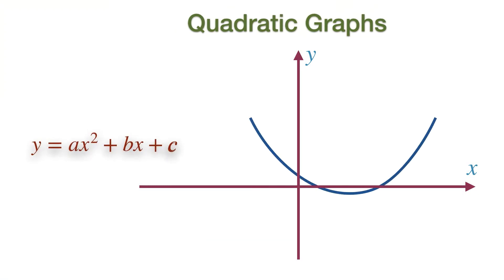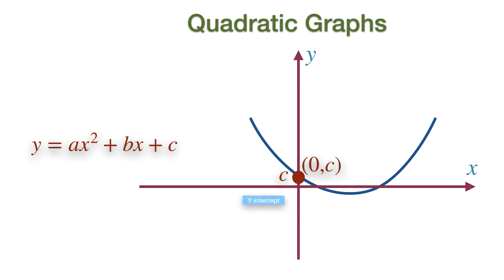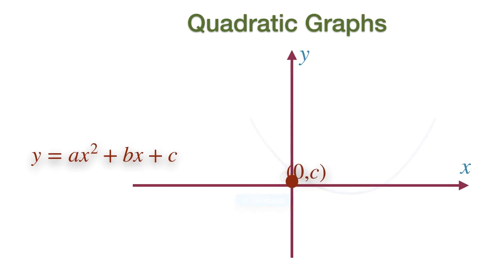The constant C tells us the Y intercept of the graph. This is where the X coordinate will be 0, therefore the coordinate at which the graph crosses the Y axis will be (0, C).